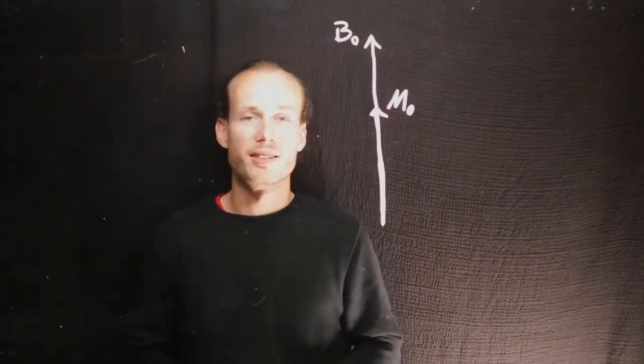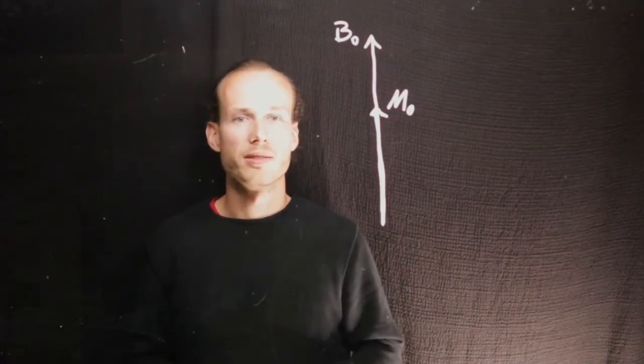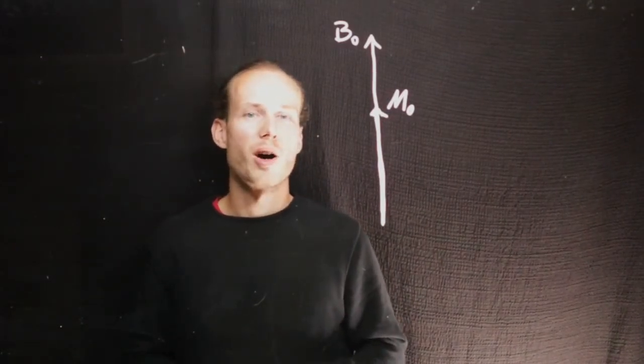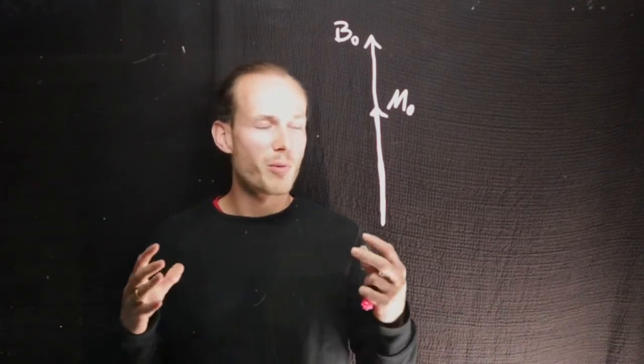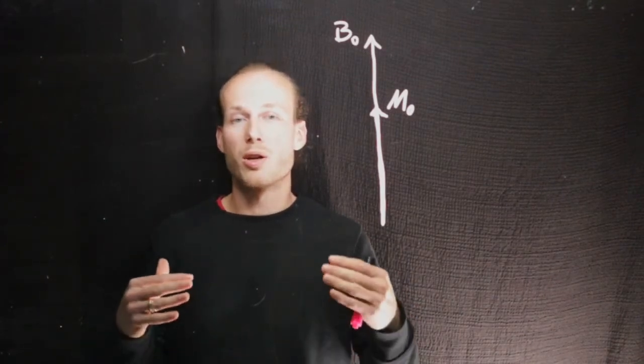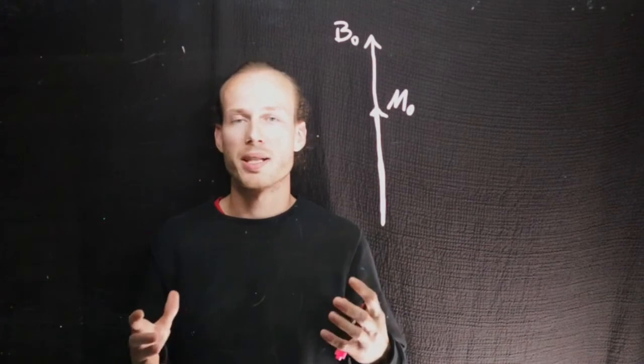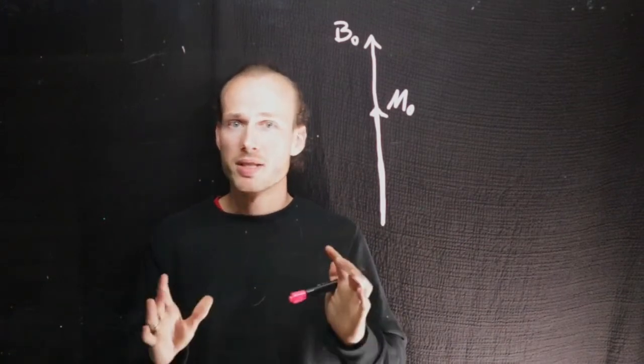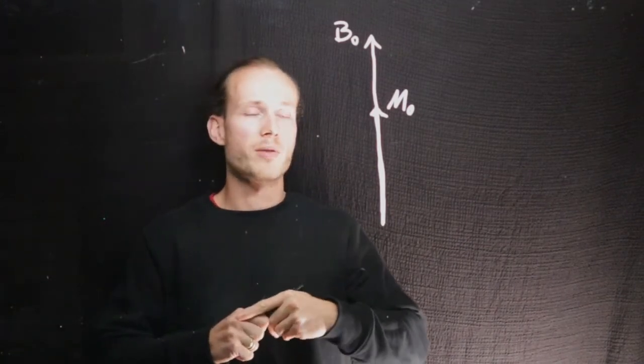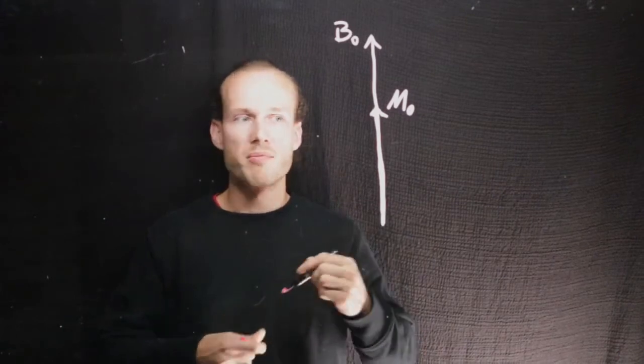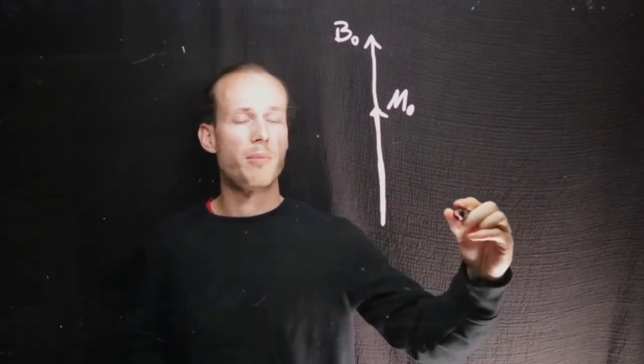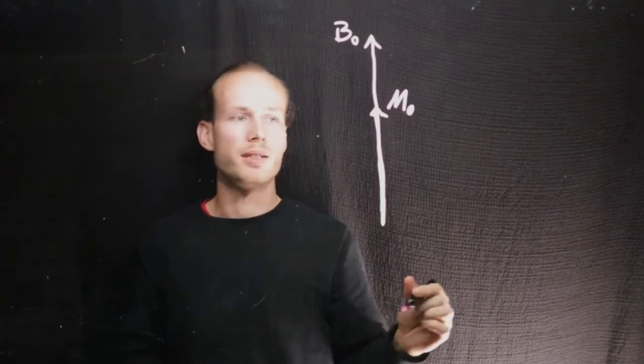Now that we have created a magnetization in the z-direction, we need some method of detecting its presence. And the way we do this is with coils that are picking up an electromagnetic signal. It's very similar to an antenna. And we will make this drawing just as a solenoid coil that is perpendicular to this magnetization.